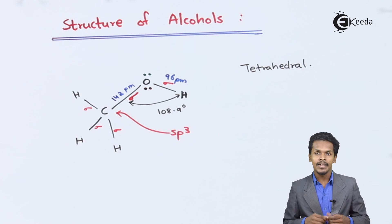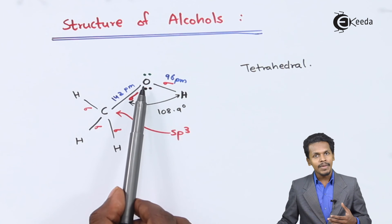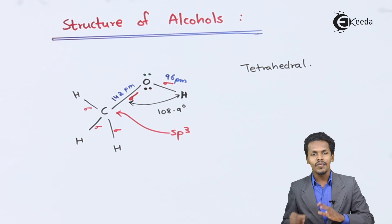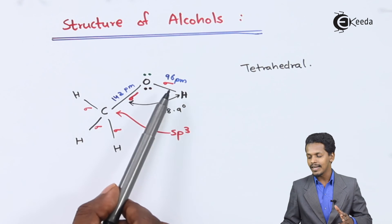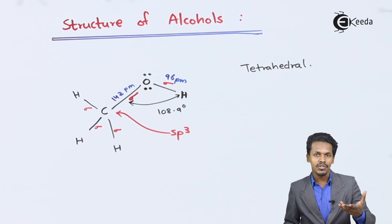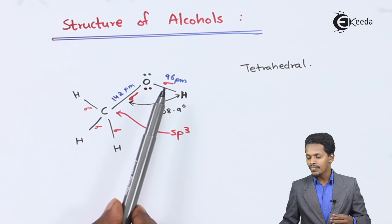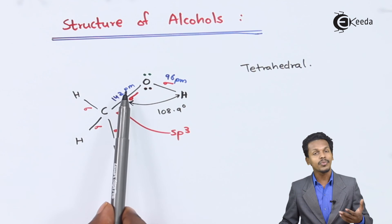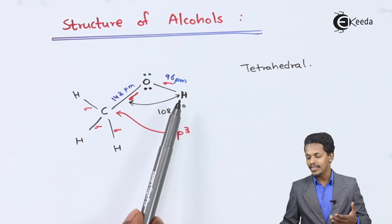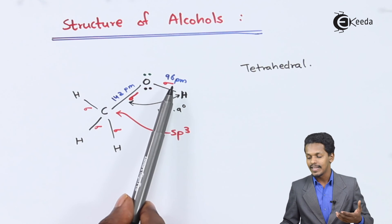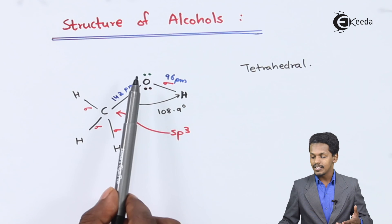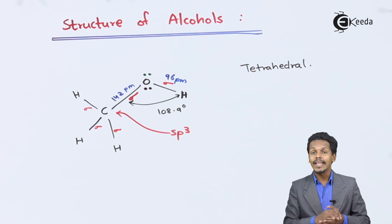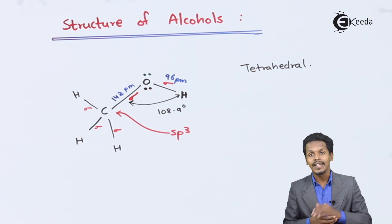Talking about the polarity of this molecule — this oxygen atom is more electronegative compared to hydrogen, which is electropositive. So the bond between oxygen and hydrogen is polar in nature. The C-O distance is 1.42 Å and the O-H distance is 96 pm, and this makes the alcohol basically polar in nature. So alcohol can also be used as an organic solvent.